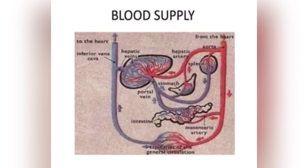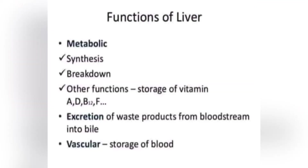Now I will talk about blood supply. The liver has two sources of blood supply: the hepatic artery and the hepatic portal vein. The hepatic artery supplies oxygenated blood, while the hepatic portal vein supplies deoxygenated blood from the small intestine.